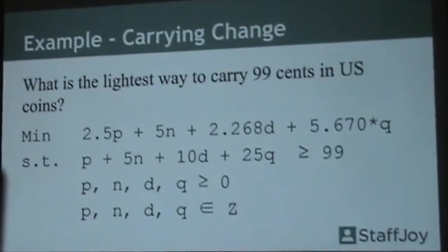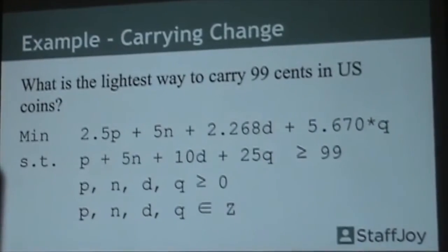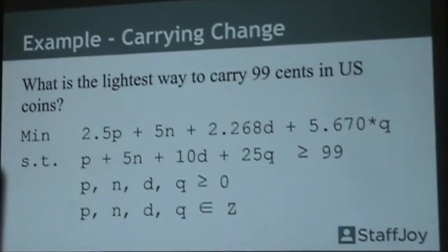This is just a basic example of what we mean when talking about optimization. If you're trying to carry 99 cents, what is the lightest way to do that? This is a basic formulation where you're saying, here's the masses of every single type of coin, and we need there to be at least 99 cents when we add these up. All these numbers have to be integers because you can't carry a fraction of a coin.